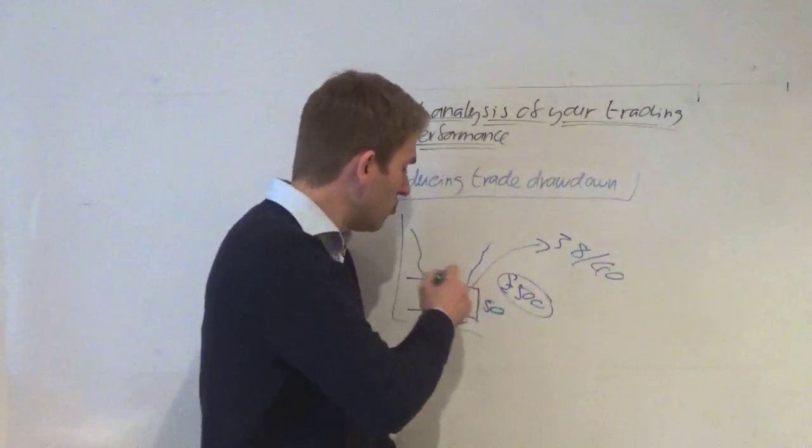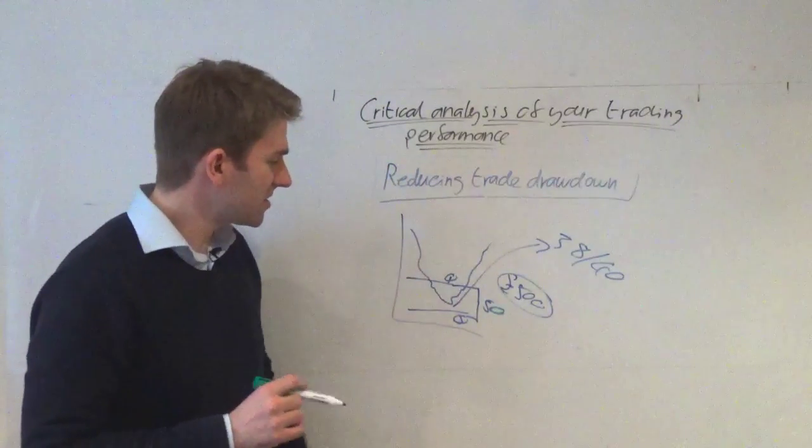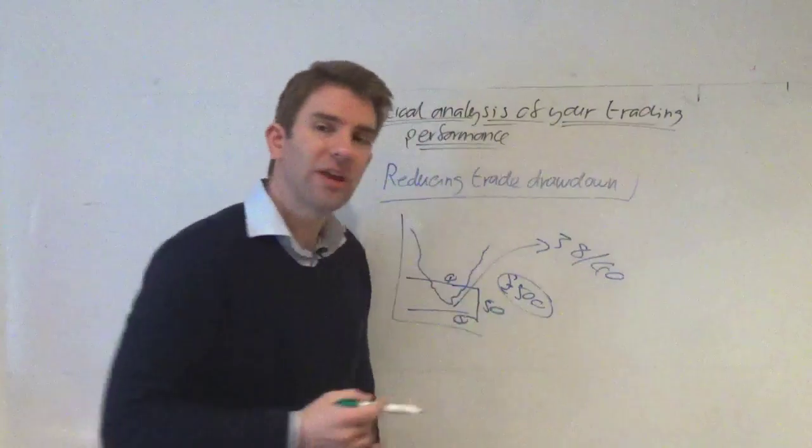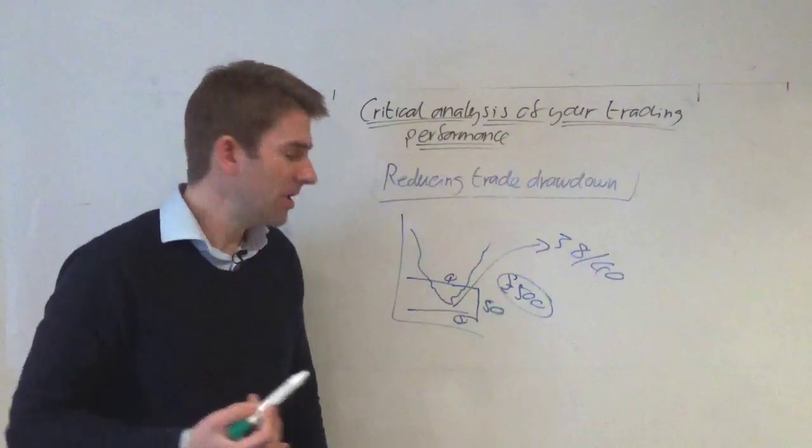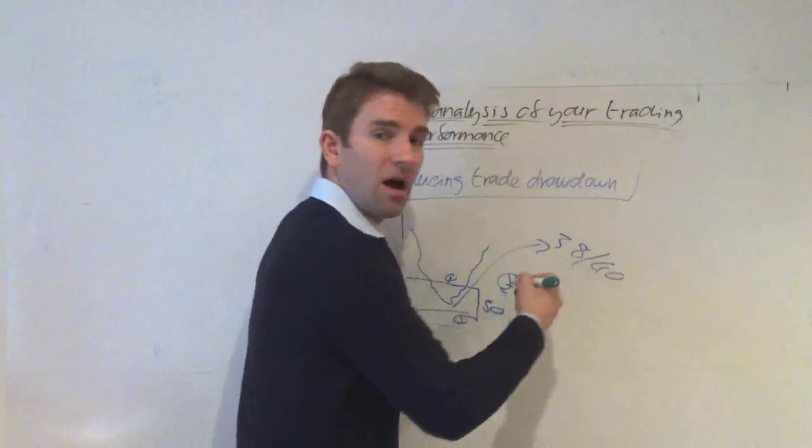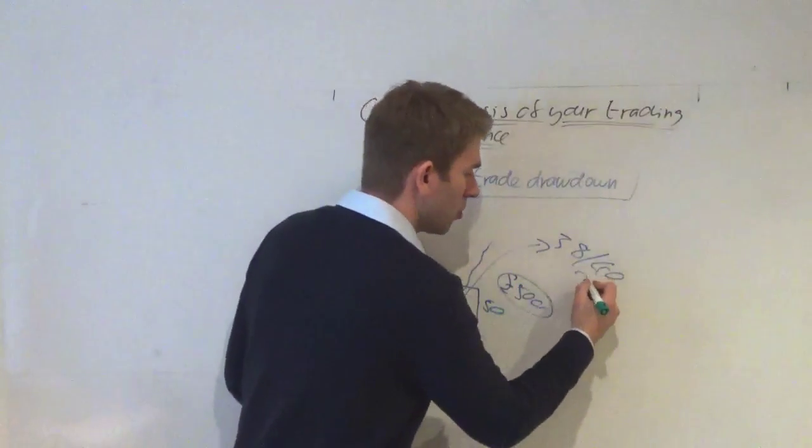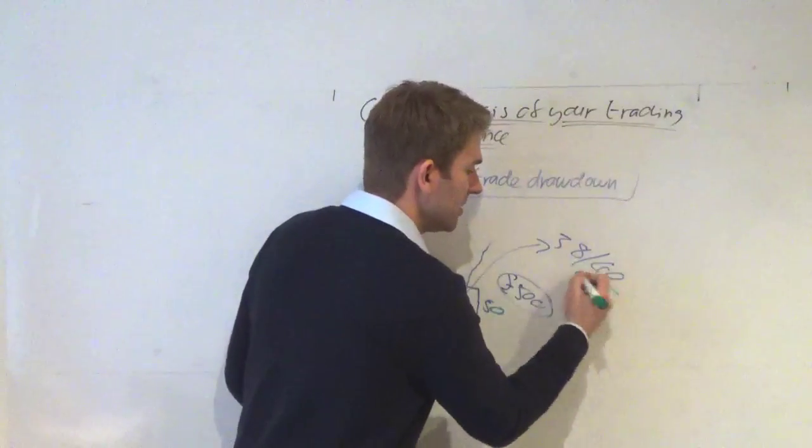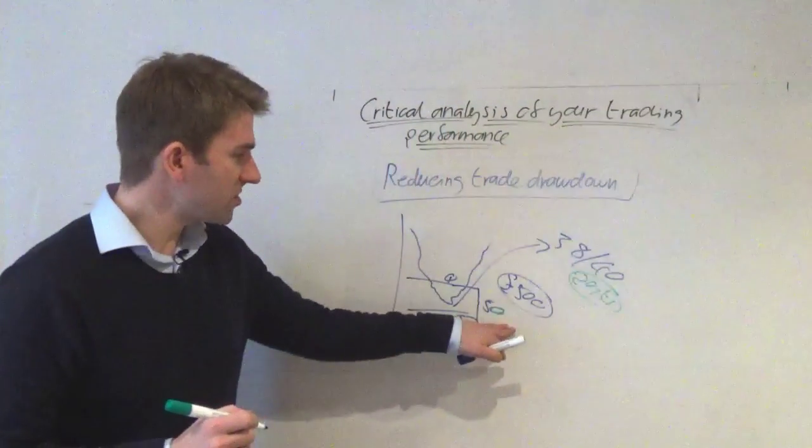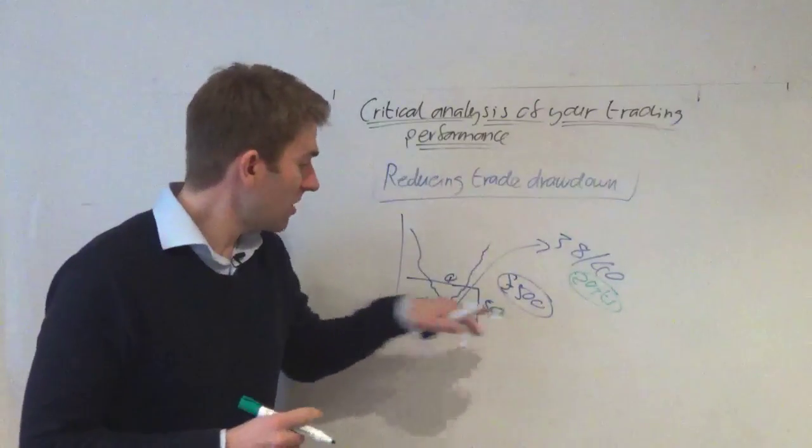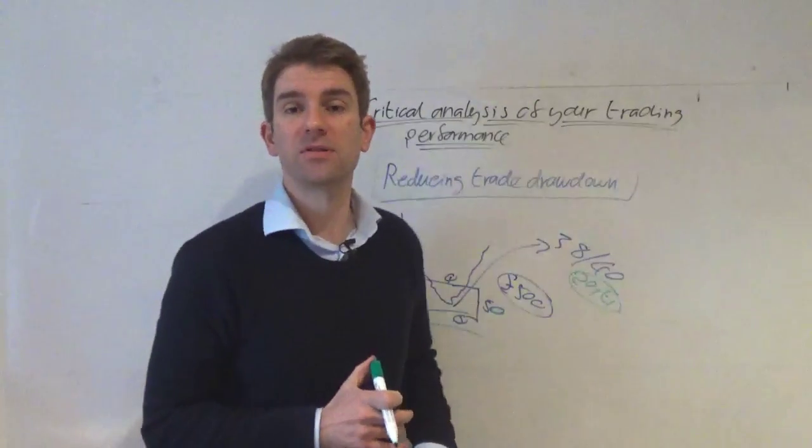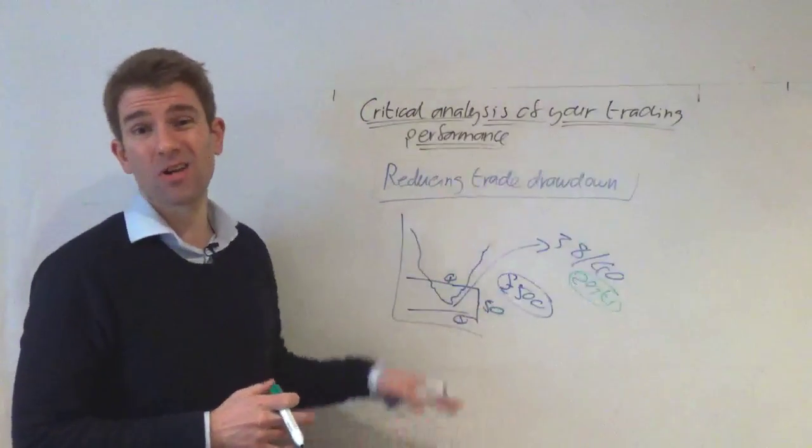However, if we can improve that entry and we can say, hey, you know what, our drawdown is only actually far less. If we can halve it, halve our average drawdown to say 20 points or 20 pips, however you want to look at it, all of a sudden, our stop can be say 25 points or 30 points. And so we can increase our position size.